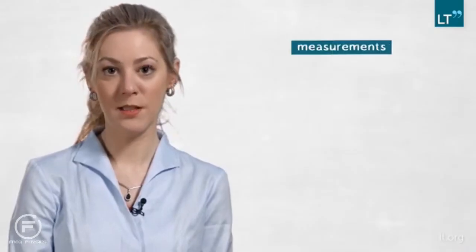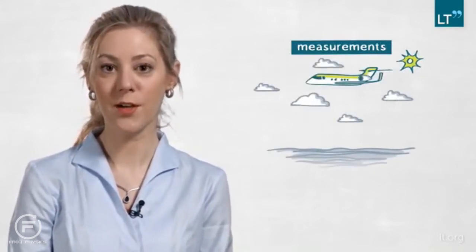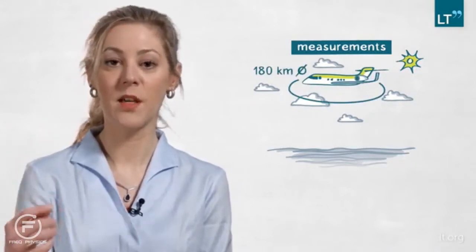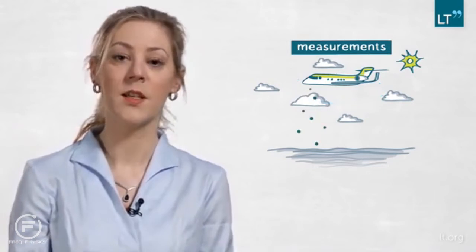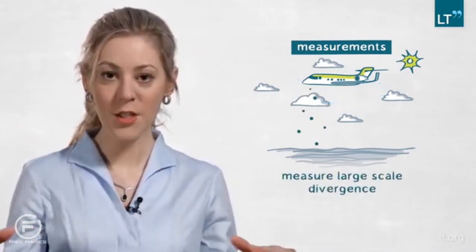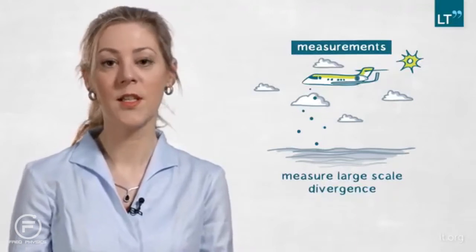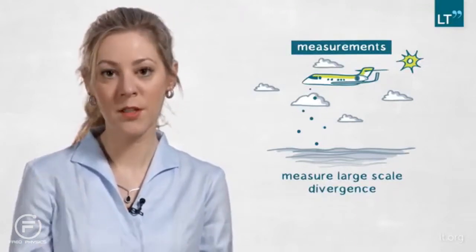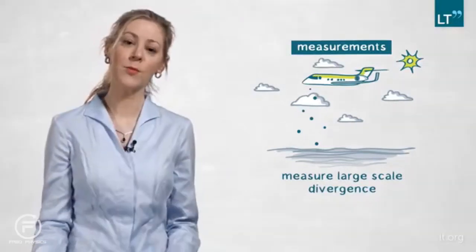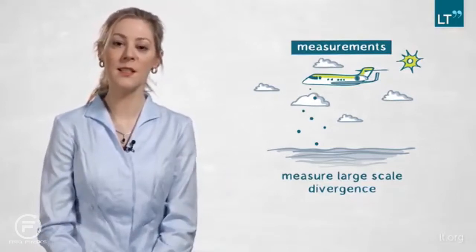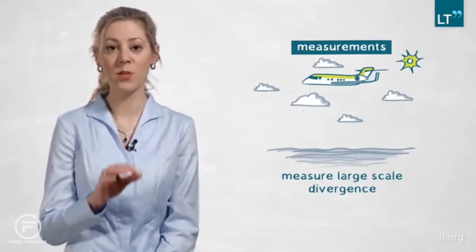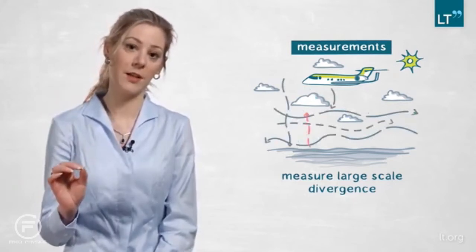These measurements were taken by my colleagues over the Atlantic, and what they did was to fly an aircraft in circles of roughly 180 kilometers diameter, while they were dropping instruments that measured the large-scale divergence. And this divergence by mass conservation is directly related to the vertical velocity. And what they found was a surprisingly large variability, both in the horizontal direction as well as in the vertical direction.